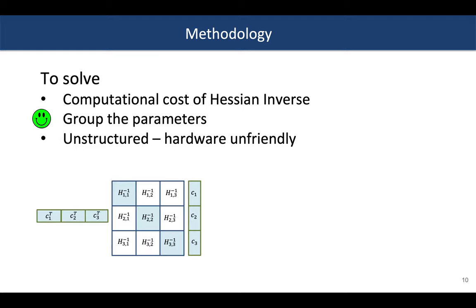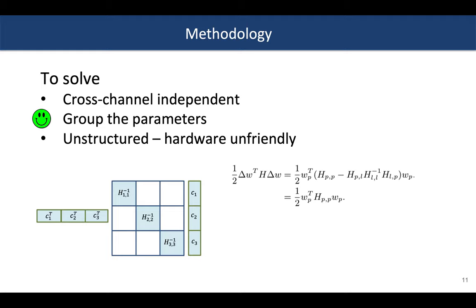We assume that there is no cross-channel correlation, so that the block elements that are not on the diagonal are zeros, and the part with the inverse also becomes zero. So there is no need to calculate Hessian inverse anymore, but we still need to approximate a quadratic formulation here.